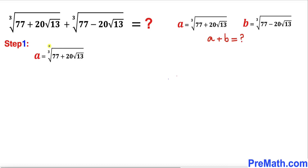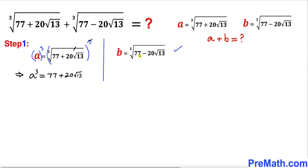Now let's go ahead and undo this cube root by taking a cube on both sides. Therefore our a cubed is going to be 77 plus 20 times square root of 13, since the cube and cube root undo each other. Similarly, our b equals the cube root of 77 minus 20 times square root of 13, and taking a cube on both sides gives us b cubed equals 77 minus 20 times square root of 13.